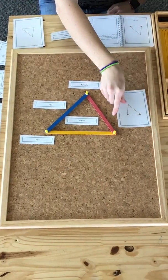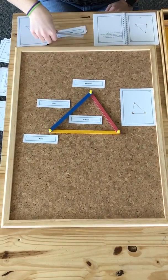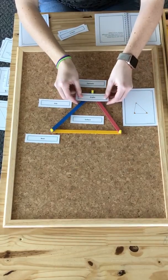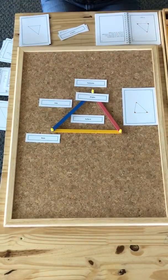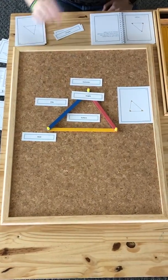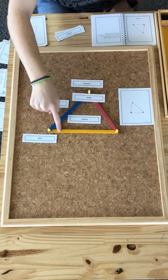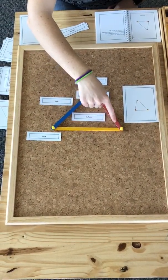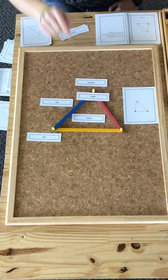Our next part is the angles. So the angles are three, there are three angles in a triangle. One, two, and three right here.